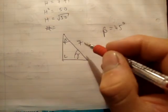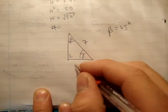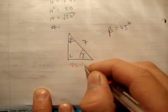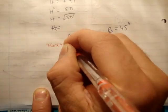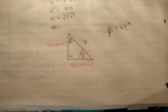So Sohcahtoa again. So we have the hypotenuse and we have the angle, so you should be able to write this straight away as 7 sine of 45, and this one here is 7 cosine of 45.